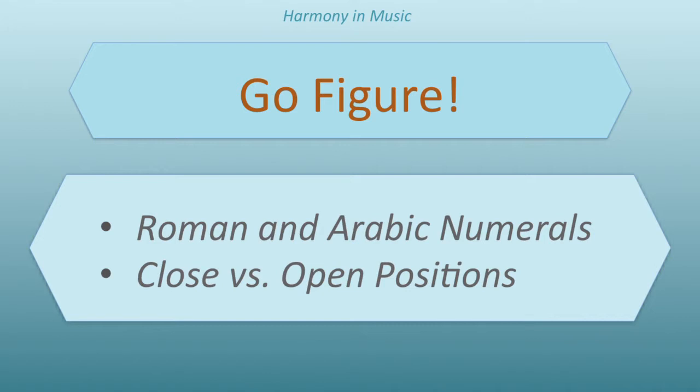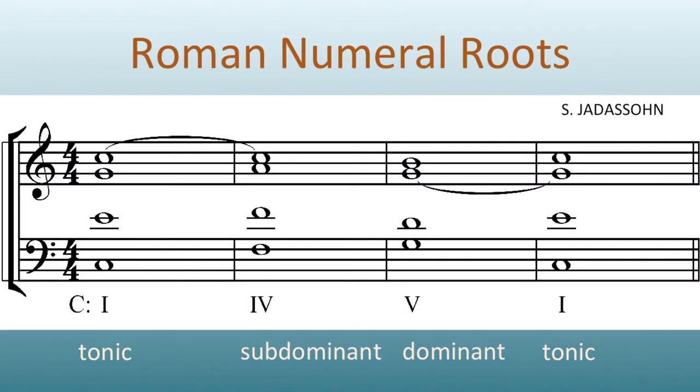In our four-part writing, we have focused on the primary triads of the first, fourth, and fifth degrees of the scale — the tonic, subdominant, and dominant. We marked the bass notes with Roman numerals, and for now, the bass notes are the roots of the chords.